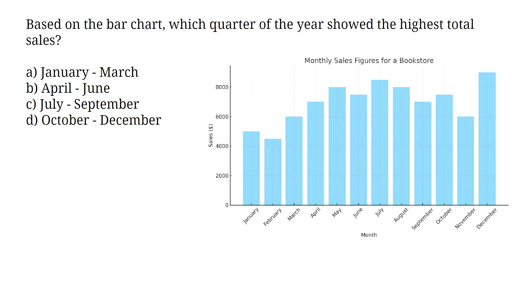Based on the bar chart, which quarter of the year showed the highest total sales? A. January to March, B. April to June, C. July to September, D. October to December. This is pretty straightforward. The work here is being able to accurately eyeball or estimate the values of the graph. Eyeballing is a very great way to solve questions on graphs. However, it is not the best method for everyone.